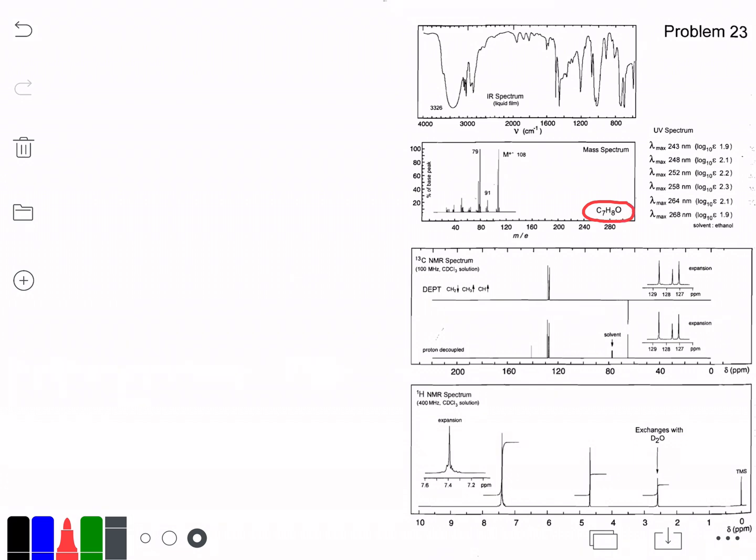In this case, the problem directly gave us a formula: C7H8O. We need to figure out how many degrees of unsaturation that contains so we know what to start looking for in our molecular structure. Remember the degrees of unsaturation rules - we're going to leave out the oxygen here.